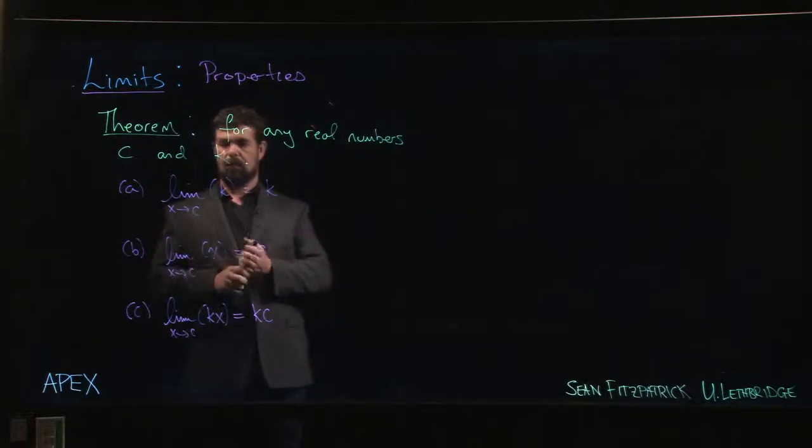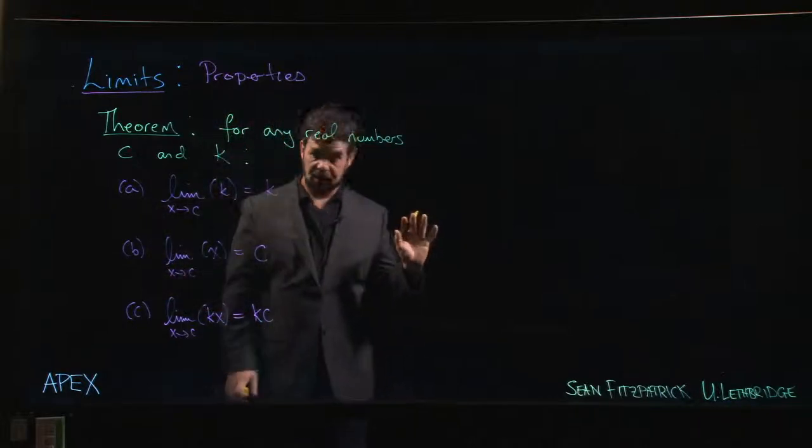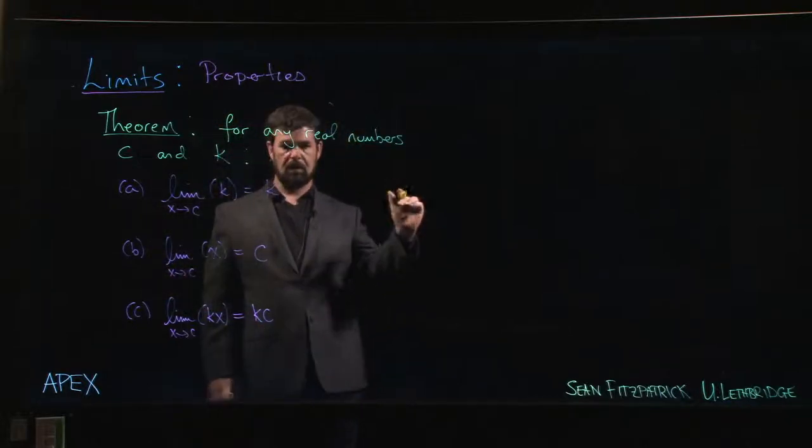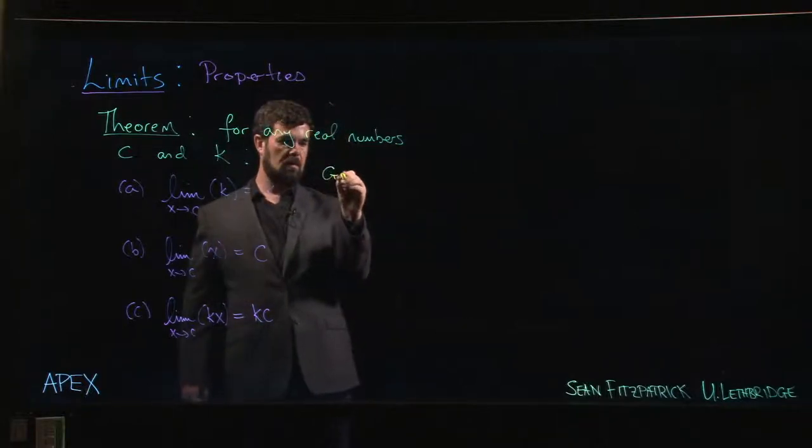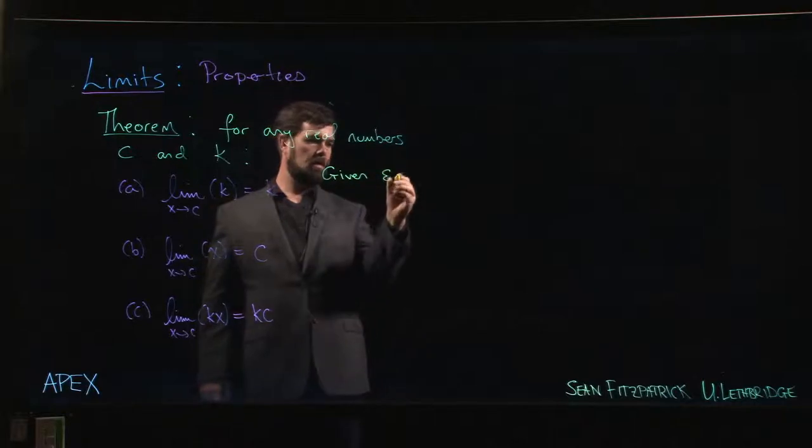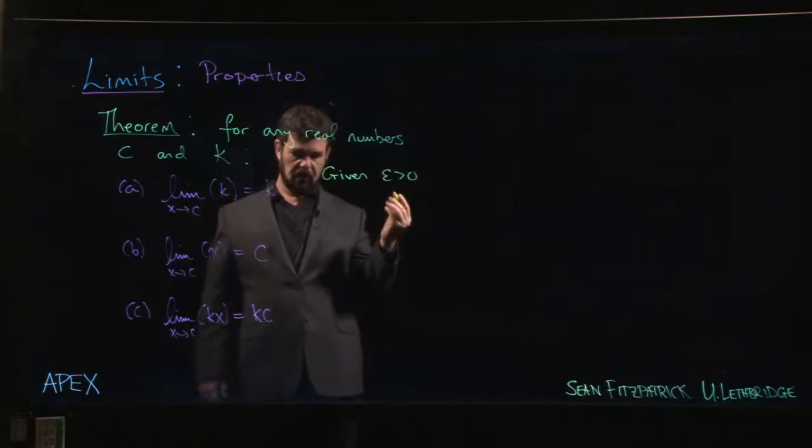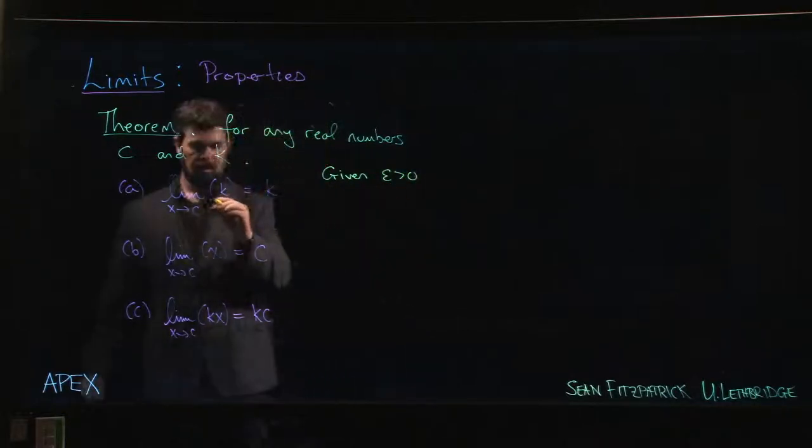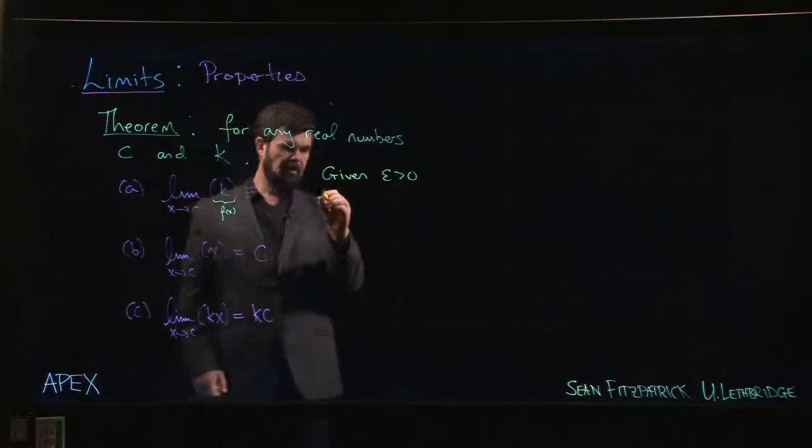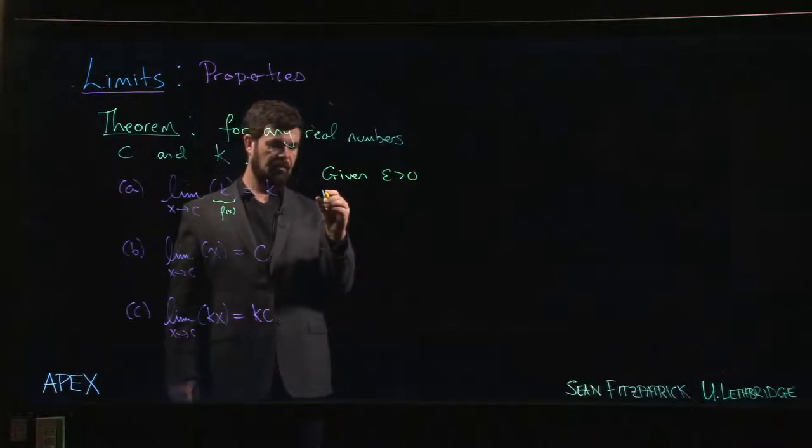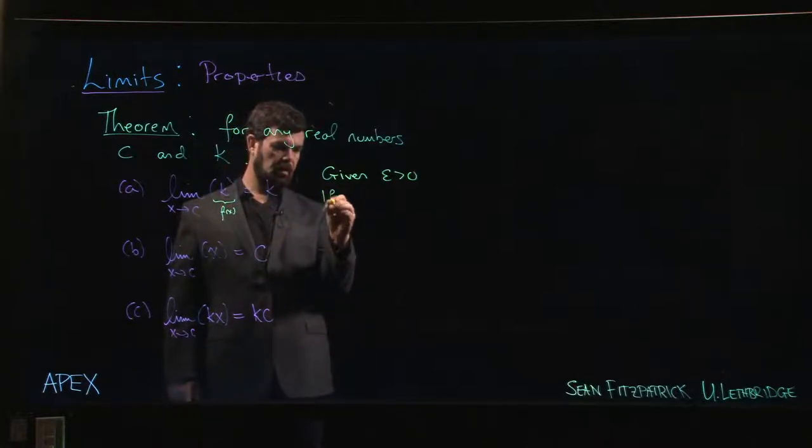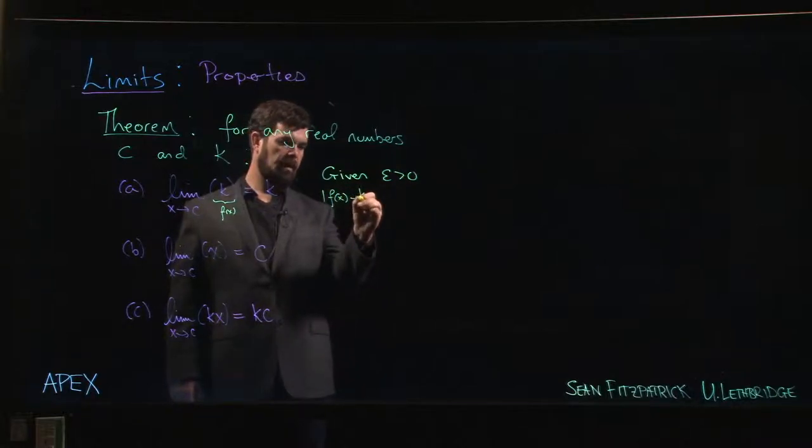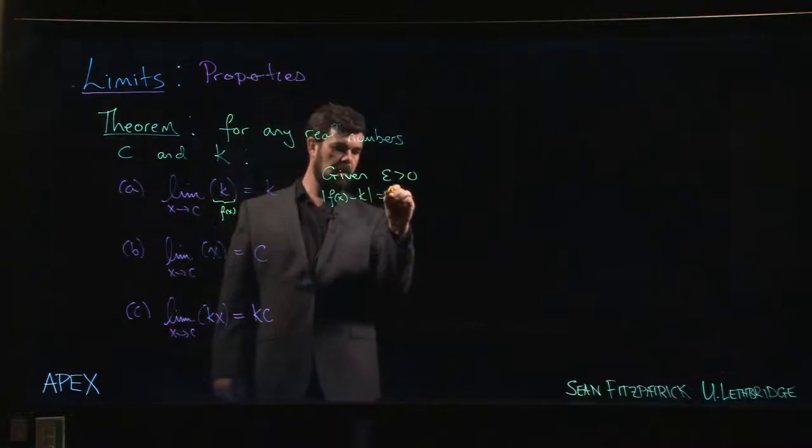In the first one, there's really nothing to do because given epsilon greater than zero, your function is just a constant function. So basically this is saying that the limit of any constant function is that constant. So f of x minus k, well that's absolute value of k minus k.